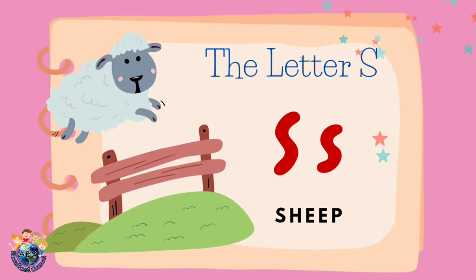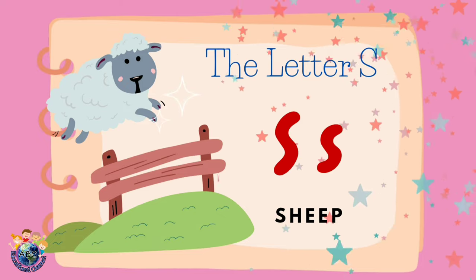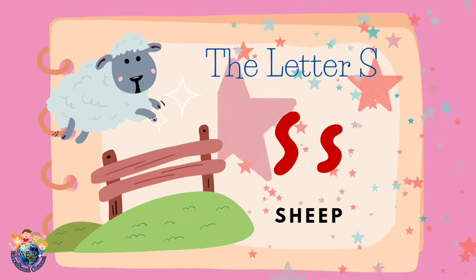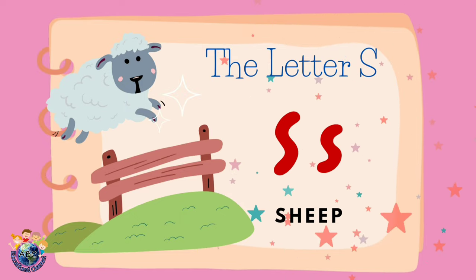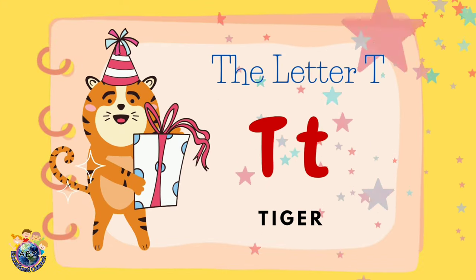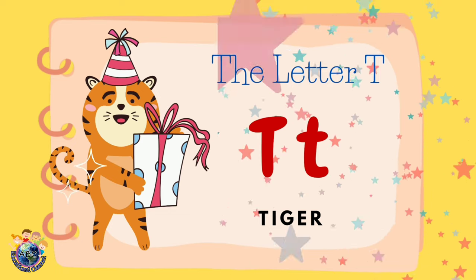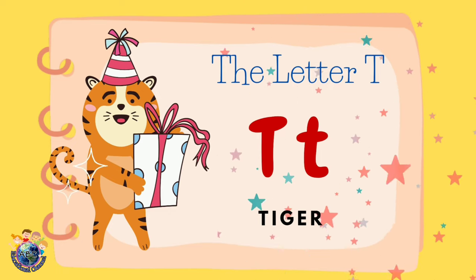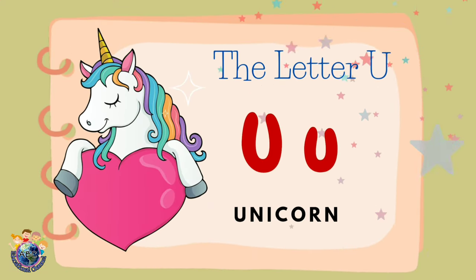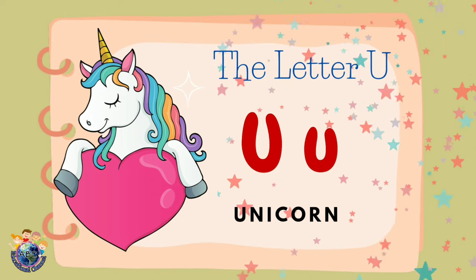The letter S. S is for sheep. Sheep. The letter T. T is for tiger. Tiger. The letter U. U is for unicorn. Unicorn.